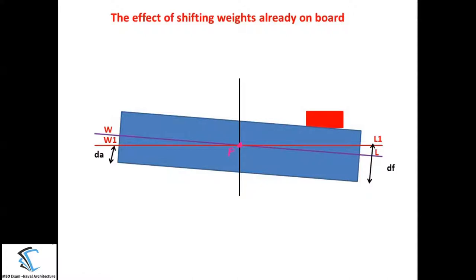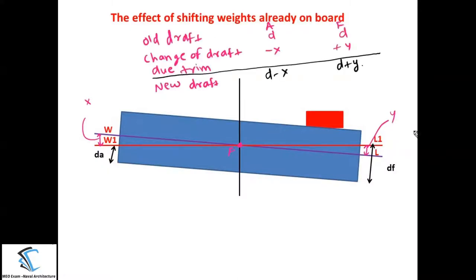Now you can see here there are two water lines. The first water line in purple colour is WL, the old water line before shifting the cargo, and W1L1 is the new water line. As the water surface is always horizontal, the ship is going to incline in the forward direction. There will be an increment in the draft at the forward side — let us call it Y — and a decrement in the draft at the aft side — let us call it X. For the calculation of new draft after shifting cargo forward, you always have to create a table.